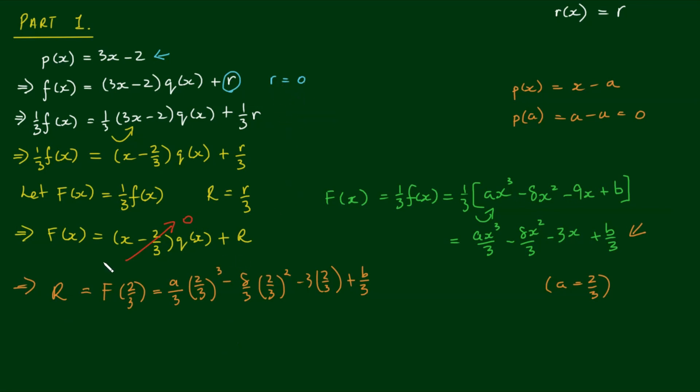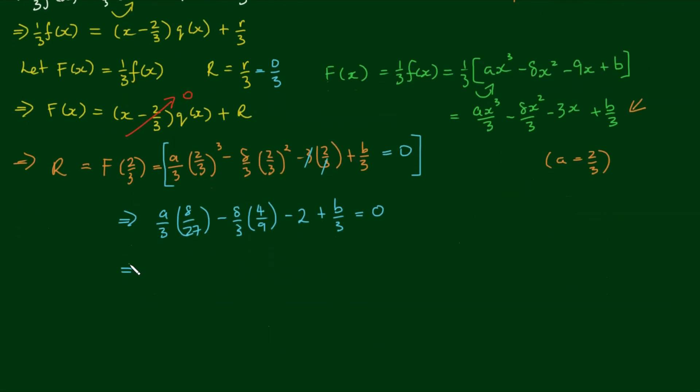So if little r is equal to 0, big R, which equals little r over 3, is also equal to 0 over 3, which means big R is also equal to 0. So if we simply take this portion of the expression here, we've got a on 3 by, when we cubed 2 thirds, we get 8 on 27, minus 8 on 3. When we squared 2 thirds, we get 4 on 9. 3 cancels with 3 to leave us with minus 2, plus b on 3. And don't forget, that equals 0. So, if we expand and simplify, we get 8a on 81 minus 8 fours of 32 over 27 minus 2 plus b on 3 equals 0.